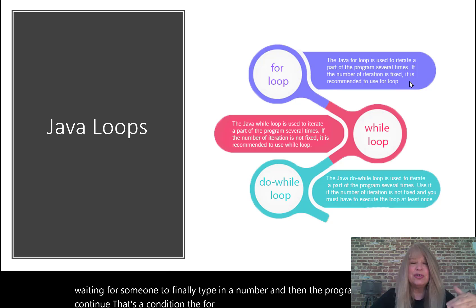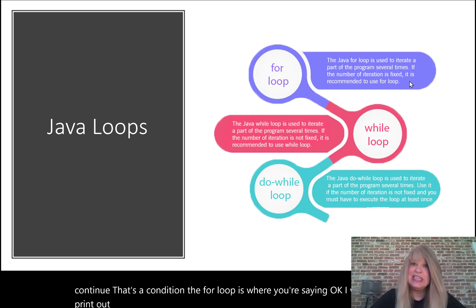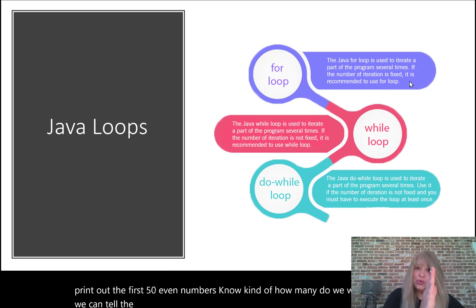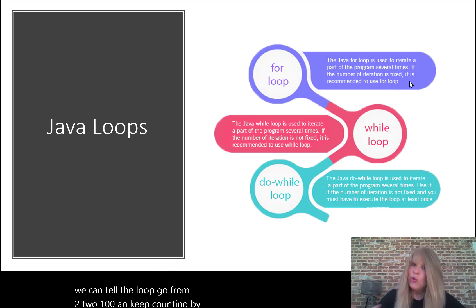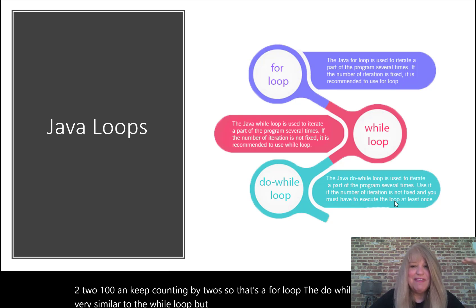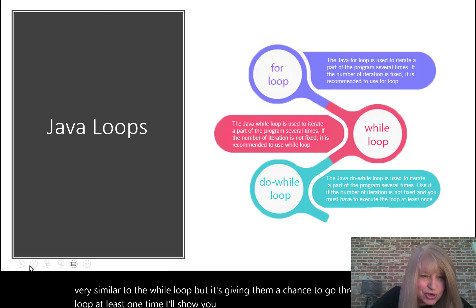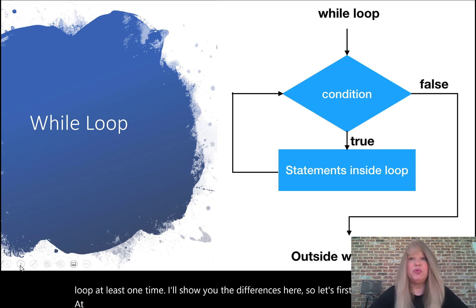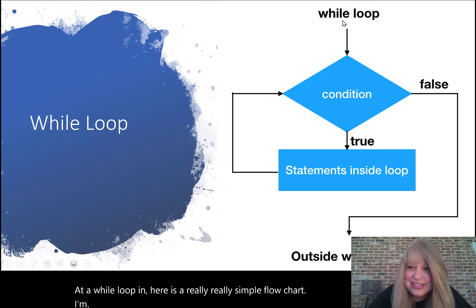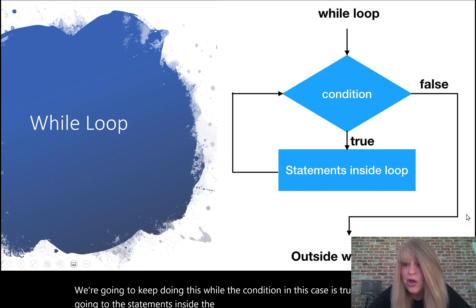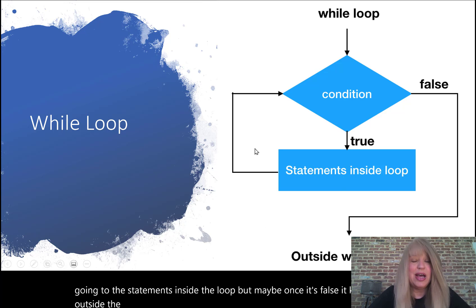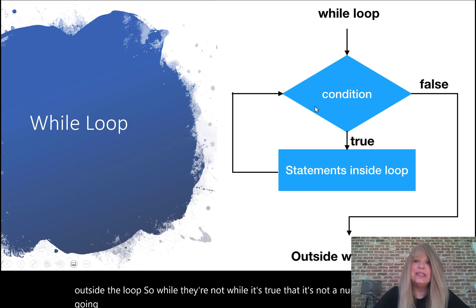The for loop is where you say: I want to print out the first 50 even numbers. We know how many we want, so we can tell the loop to go from 2 to 100 and keep counting by twos. The do-while loop is very similar to the while loop but gives the user a chance to go through the loop at least one time. In a while loop flowchart, we keep doing this while the condition is true; once it's false, it kicks us outside the loop.